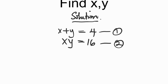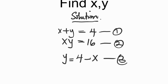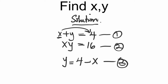Now let us rewrite equation 1 such that y is now equal to 4 minus x. We got this equation 3 by moving x from the left-hand side over to the right-hand side.